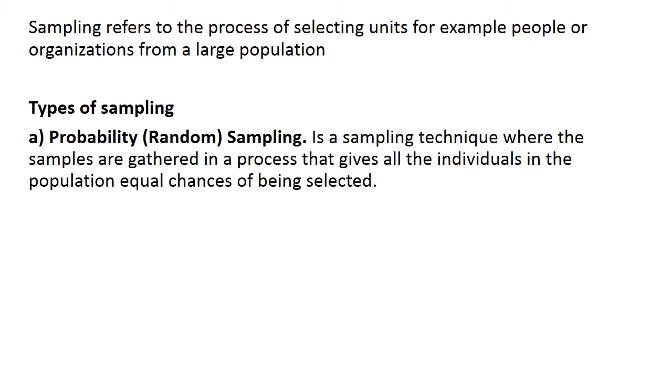So we have two categories of sampling, two types of sampling. One is probability sampling. The second one is non-probability sampling. With probability sampling, the technique where the samples are gathered in a process that gives all individuals equal chances of being selected.